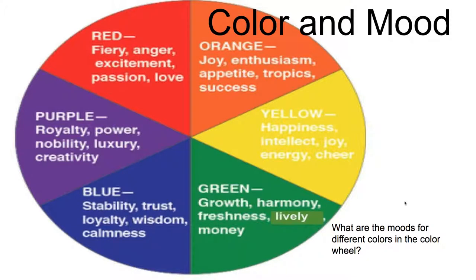So what are the moods for different colors in this color wheel? Here you can see yellow shows happiness, intellect, joy, energy, and cheer. You may feel that yellow might represent another kind of mood for yourself, and you can go ahead and choose a different mood for this color and for any color in the color wheel.